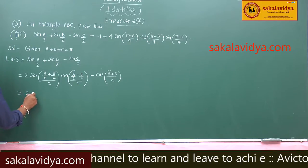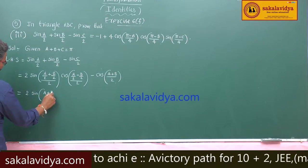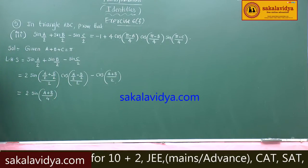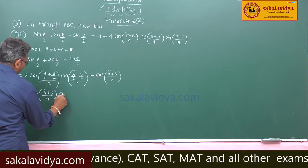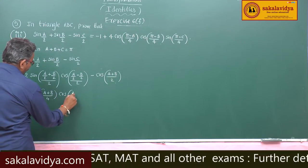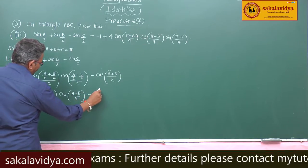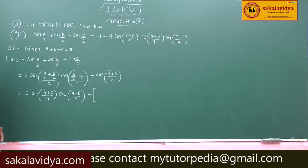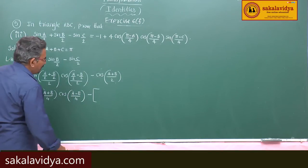This becomes 2·sin((a+b)/4) · cos((a-b)/4). Then cos of (a+b)/2 can be written as 1 - 2·sin²((a+b)/4), using the identity cos θ = 1 - 2sin²(θ/2).